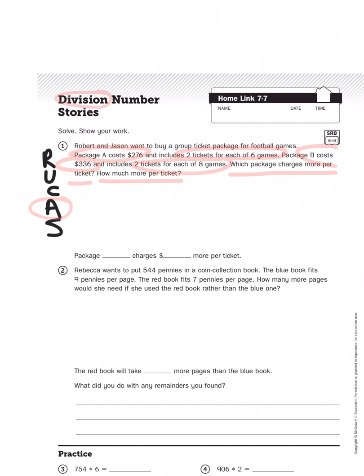As you can see, we're going to have to do two rounds of division, dividing the cost for package A and dividing the cost of package B per ticket. Now there's something you might have missed in that first or second pass-through with the problems. Package A costs $276 and includes two tickets for each of six games. How many tickets is that? That's right. Two groups of six is 12. So in order for me to figure out the exact cost of a ticket for package A, I'm going to have to divide the total price by the total number of tickets I get for that price, which is 276 divided by 12.